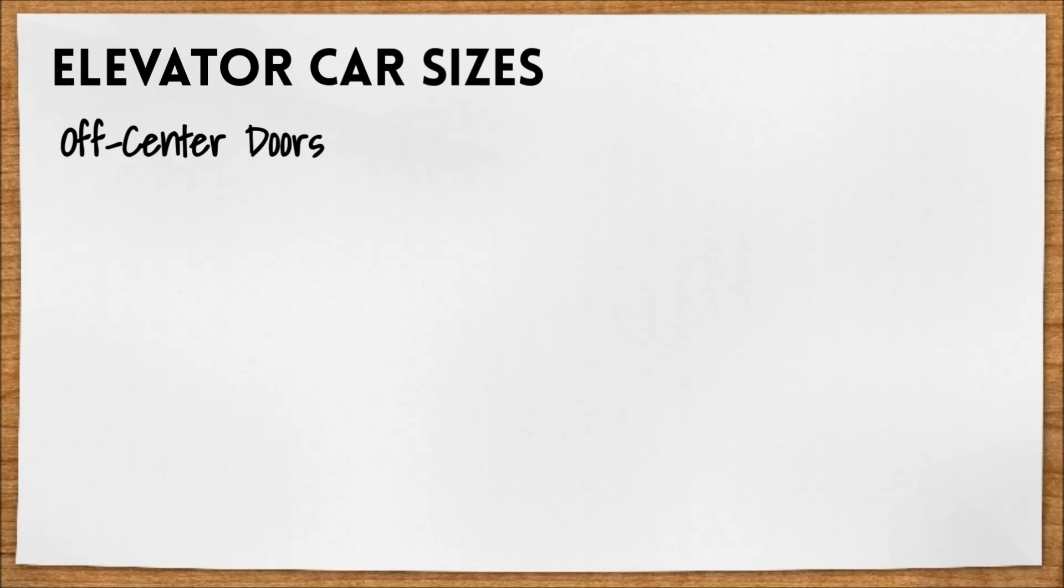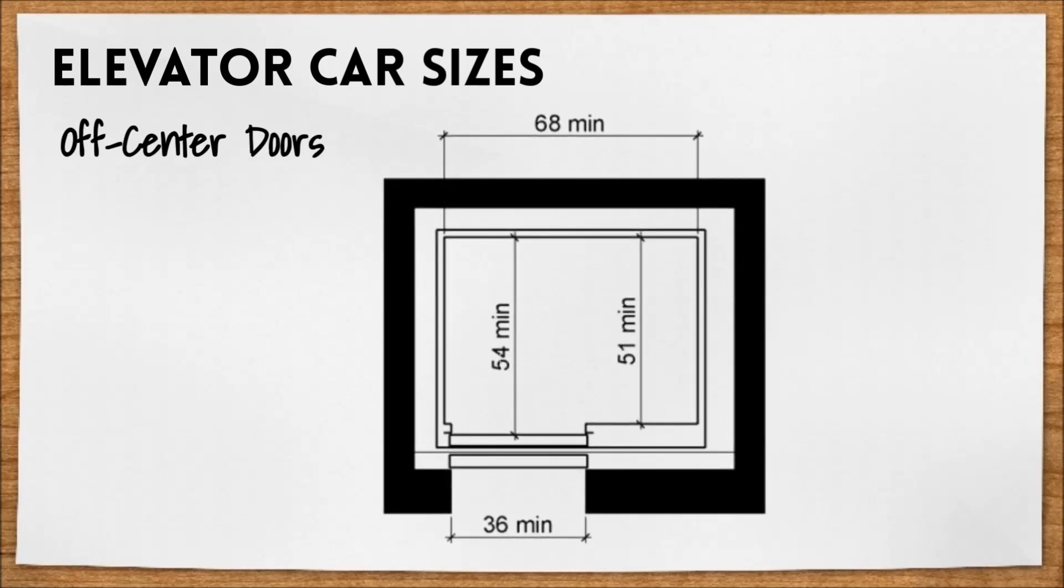Meanwhile, an elevator with doors located off to one side should be at least 68 inches wide, 51 inches deep from the back wall to the front wall, and at least 54 inches deep from the back wall to the door. The door's clear opening should be at least 36 inches wide.